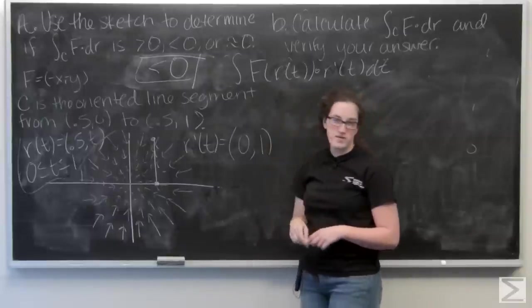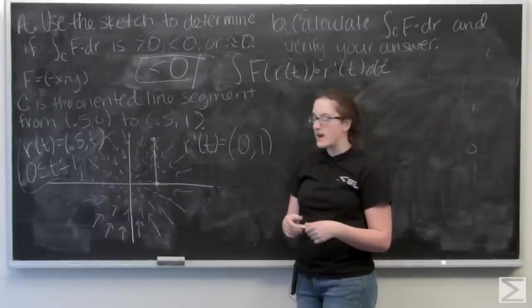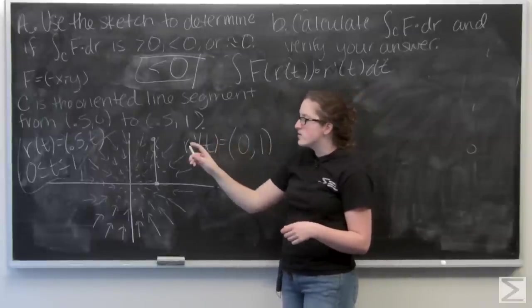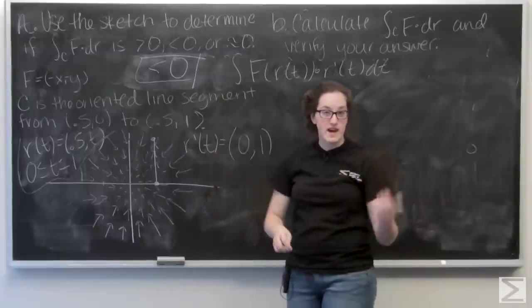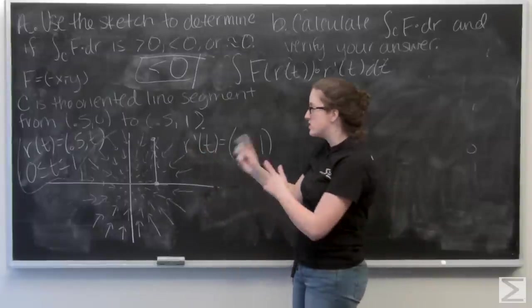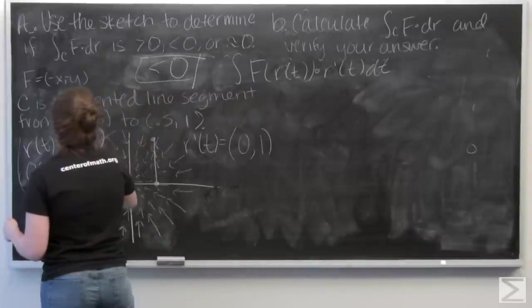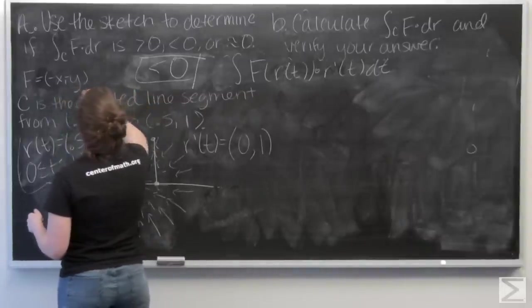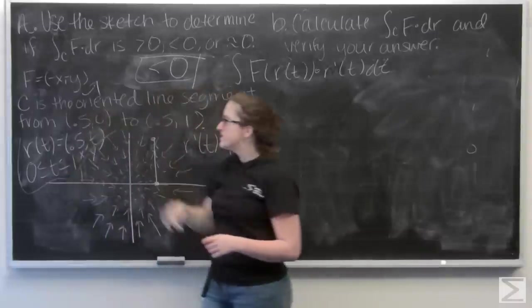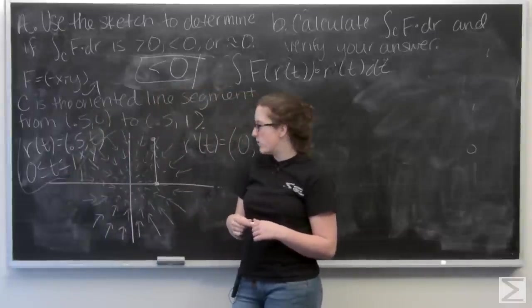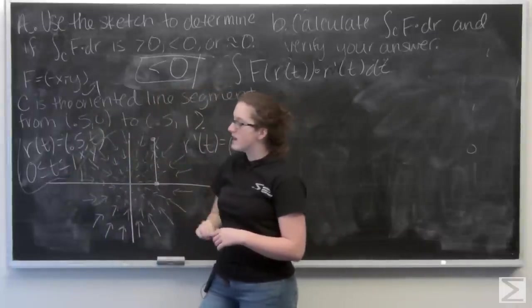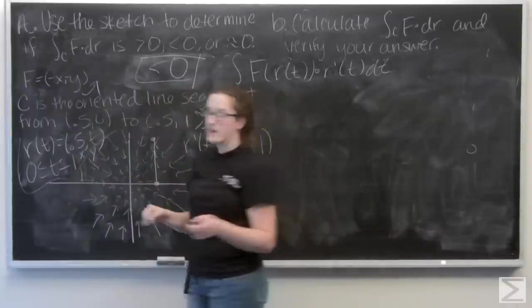Now let's find f of r of t. So the way to do that is to plug in the i component of r of t everywhere I see an x in f, and then plug the j component in everywhere I see a y. Well, this is going to be pretty easy. f is negative x negative y, so I'm going to get negative 0.5 and negative t.